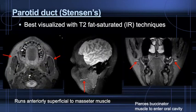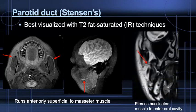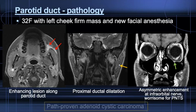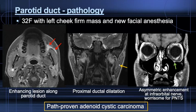The parotid duct exits the anterior superficial parotid lobe and courses within buccal fat, superficial to the masseter muscle. It is best visualized on fat-saturated T2-weighted MR imaging. On thin-section T2 coronal imaging, the duct is shown to pierce the buccinator muscle as it drains into the oral cavity at a papilla along buccal mucosa, usually at the level of the second maxillary molar. A patient referred for a left oral cavity submucosal mass showed enhancement following the parotid duct proximally; biopsy proved this to be adenoid cystic carcinoma, notorious for perineural tumor spread.